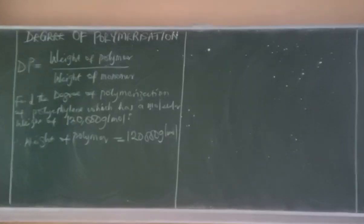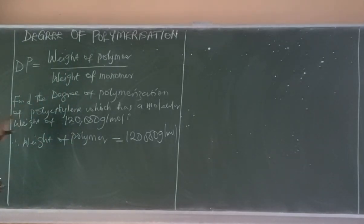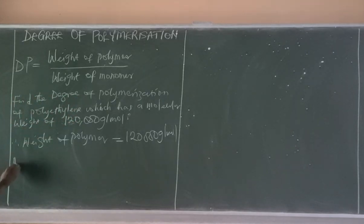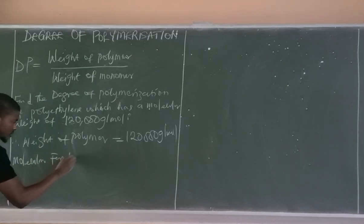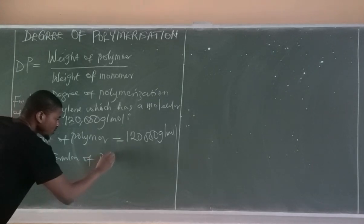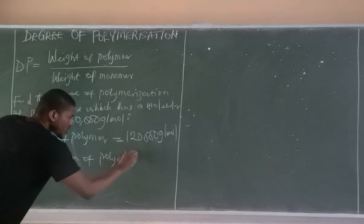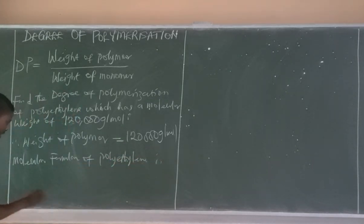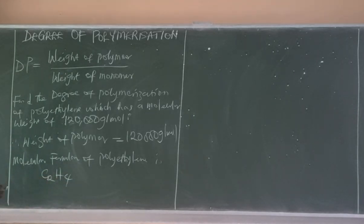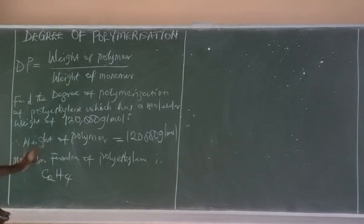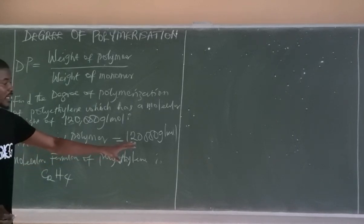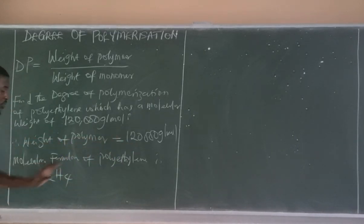This is the weight of the polymer. The polymer we are dealing with is polyethylene, and the molecular formula of polyethylene is C₂H₄. This is the molecular formula of polyethylene, and the molecular weight of this polymer has been given as 120,000 grams per mole.